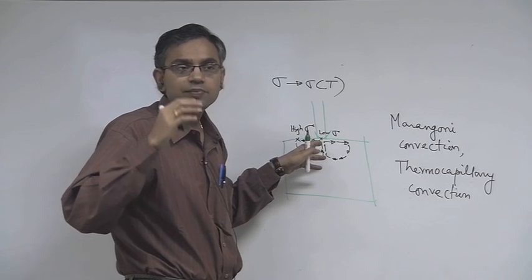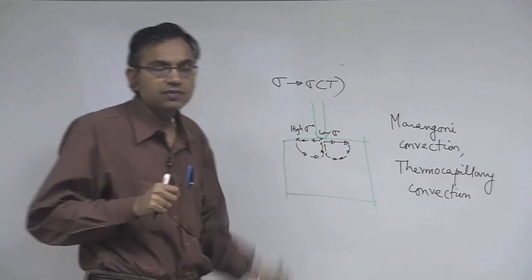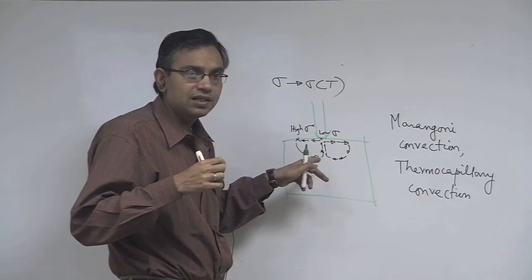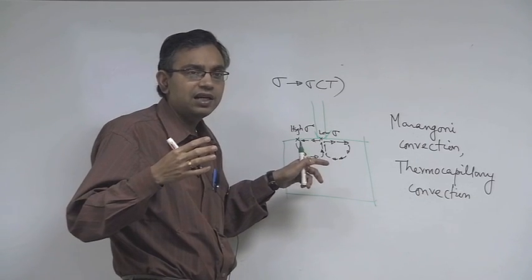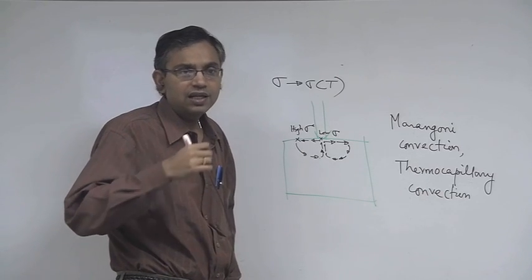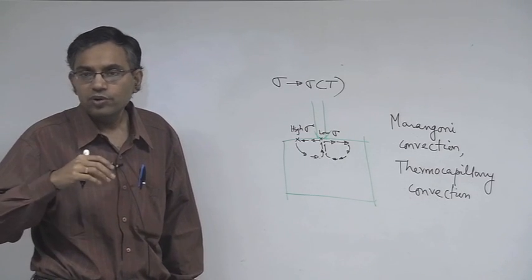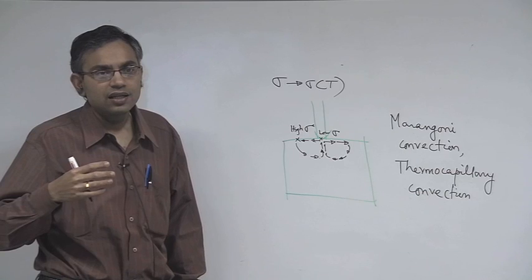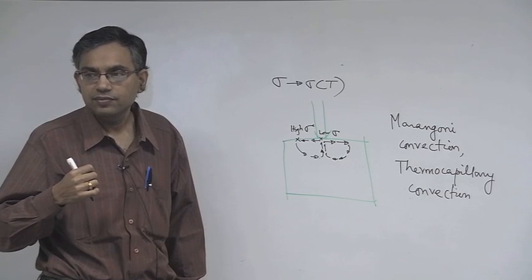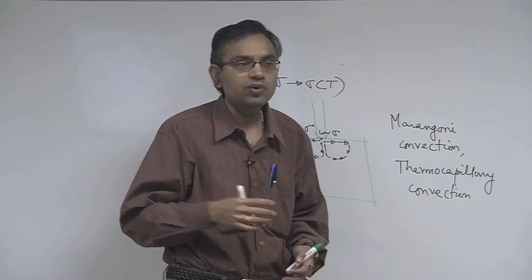Roughly speaking, the shear due to viscous effects is balanced by the shear due to surface tension gradient, so that the free surface is free of shear. If you get the shear due to surface tension gradient, it equals the shear due to viscous effects, and these two must nullify each other so that the free surface is free of shear. We should assess the stress due to the gradient of surface tension at the free surface, which will be taken up in the next lecture as we go ahead with how to modulate surface tension.